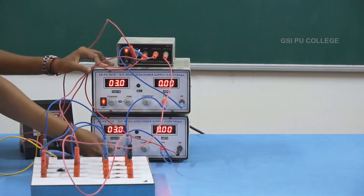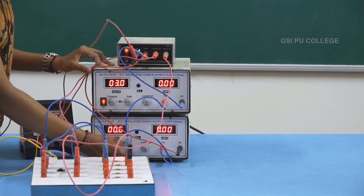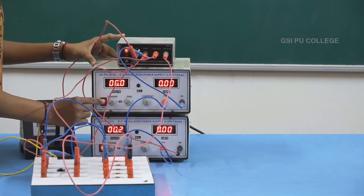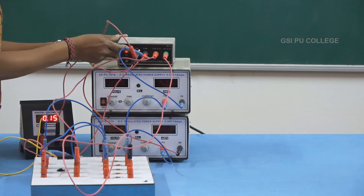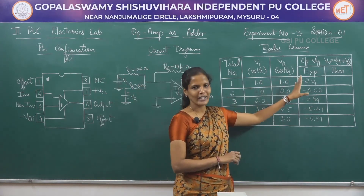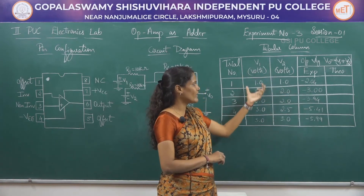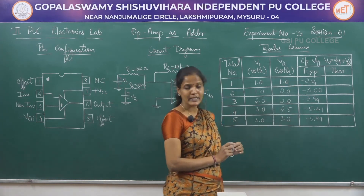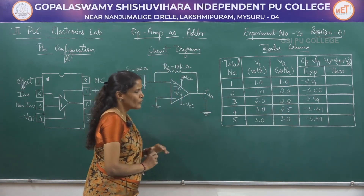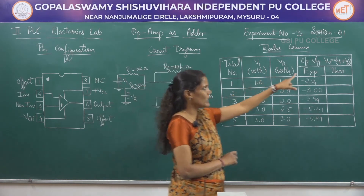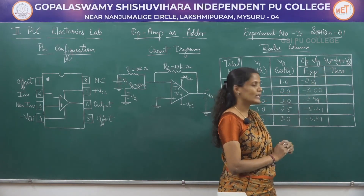After taking the readings, rotate the knobs to the zero position, switch off the power buttons of both RPS units as well as the dual power supply, and then switch off the main power button. These are the readings obtained during the experiment. For different values of V1 and V2, these are the experimental values. Now calculate the theoretical output voltage using the formula V0 equals minus of V1 plus V2.